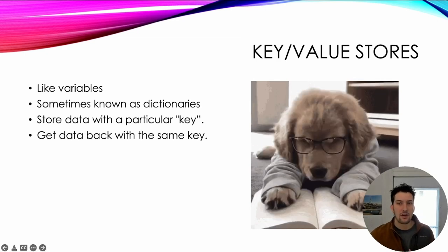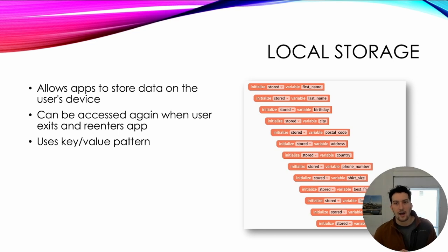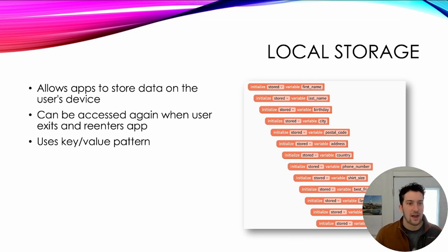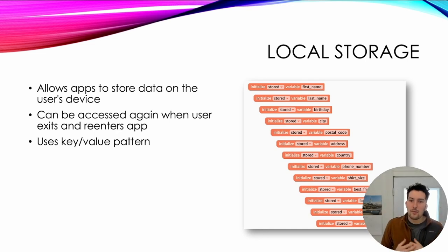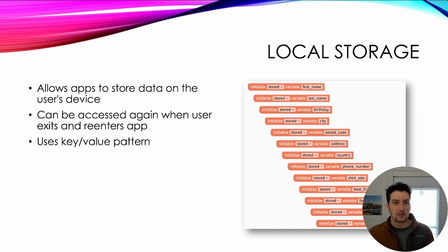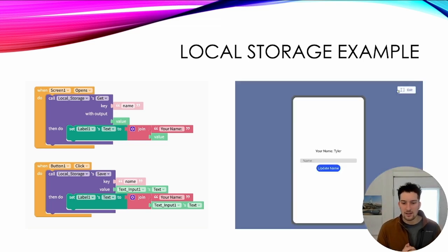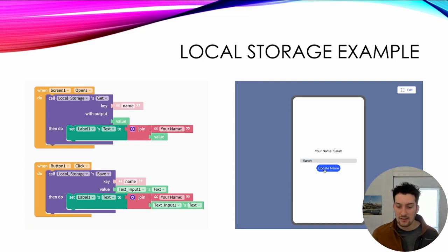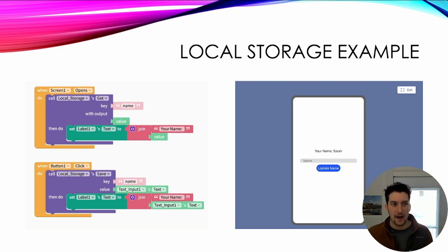There are a couple ways Thunkable can do this, and one is local storage. If I needed someone's first name, last name, birthday, city, postcode, and address, that's a lot of variables to initialize in my app and it could make the code look very messy. Local storage cleans this up — it creates one place where you grab things by the key and it returns the value. You can see it already says 'my name is Tyler', and I type in a new name — 'Sarah' — update the name, then leave the app and come back, and the name is still Sarah. So it's using that key-value pattern to store that.